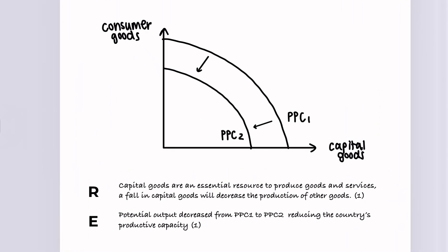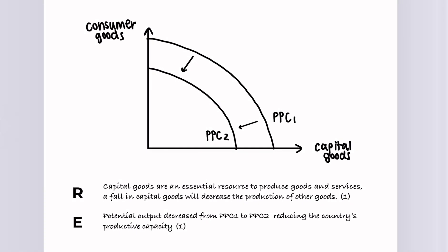So here's my example. Capital goods are an essential resource to produce goods and services. A fall in capital goods will decrease the production of other goods. This is my reason. Potential output decreases from PPC1 to PPC2, which reduces the country's productive capacity. And this is the effect of my initial reason.